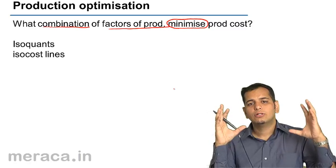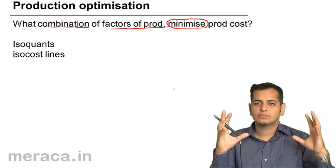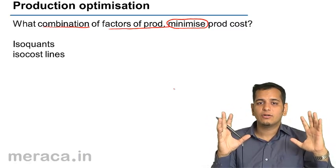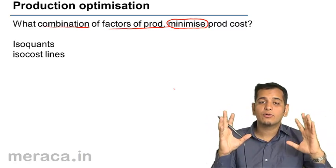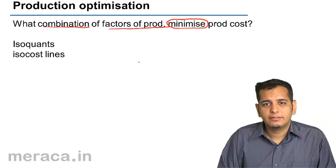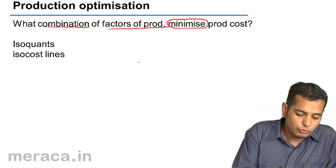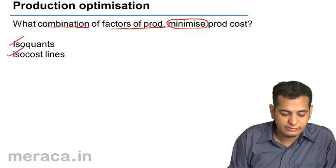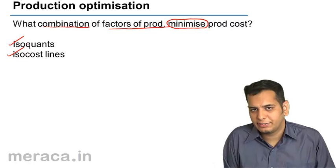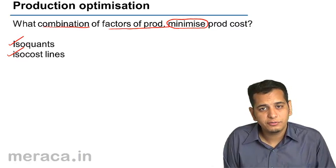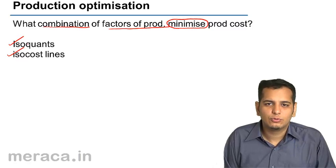How do you reduce your costs for producing your units by changing or getting a combination of factors of production? For optimizing the production, we have two devices at our disposal: first is the iso-quants, and second is the iso-cost lines. Now let's see what iso-quants and iso-cost lines are.